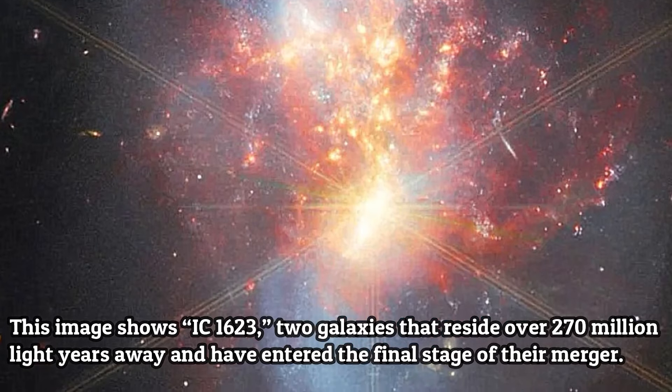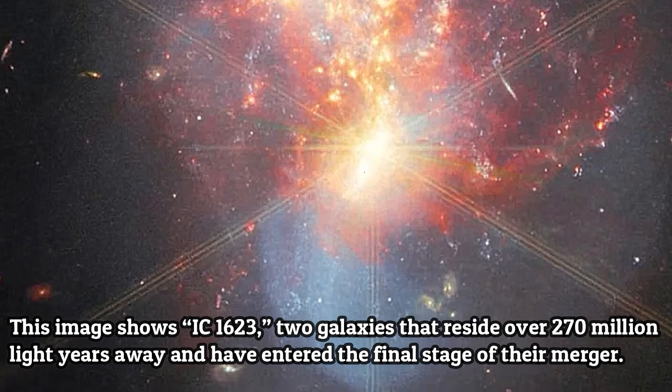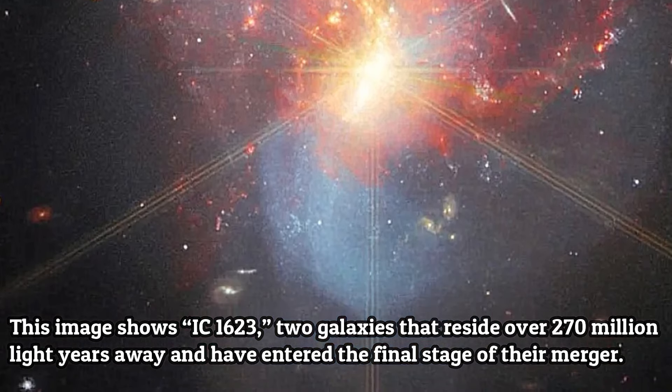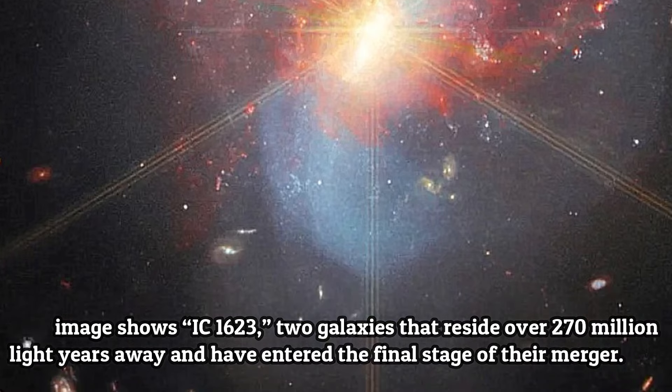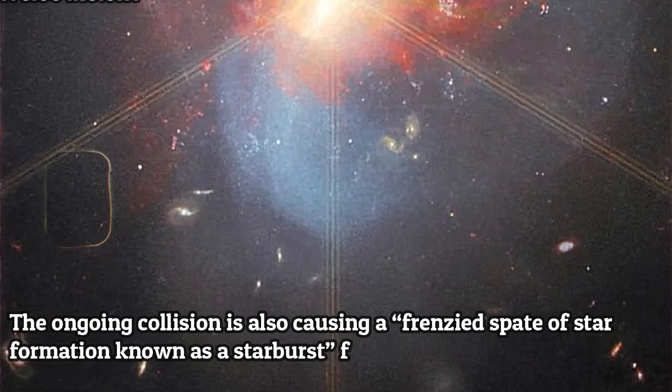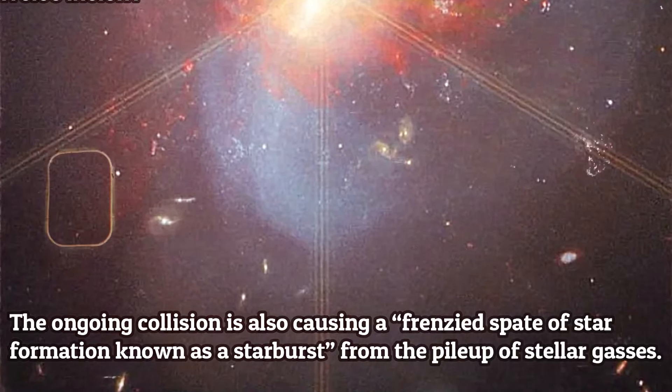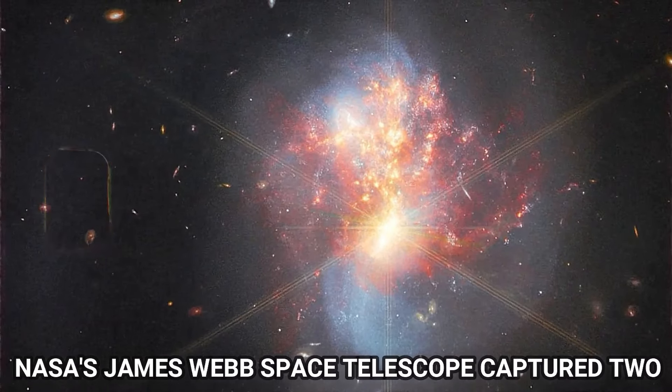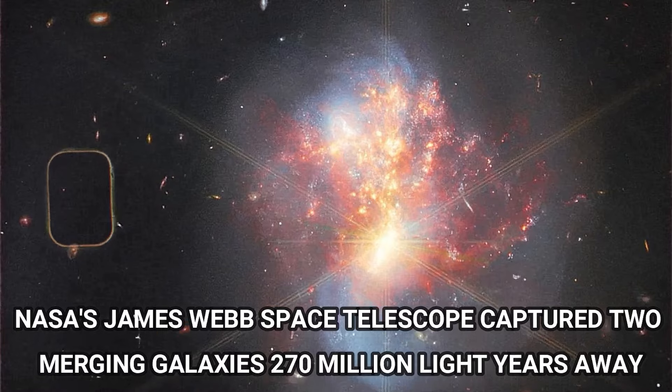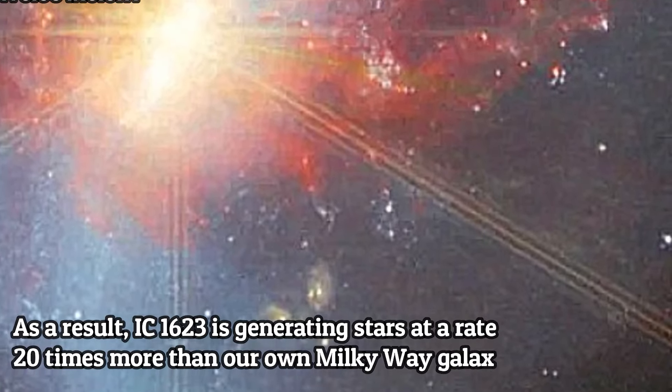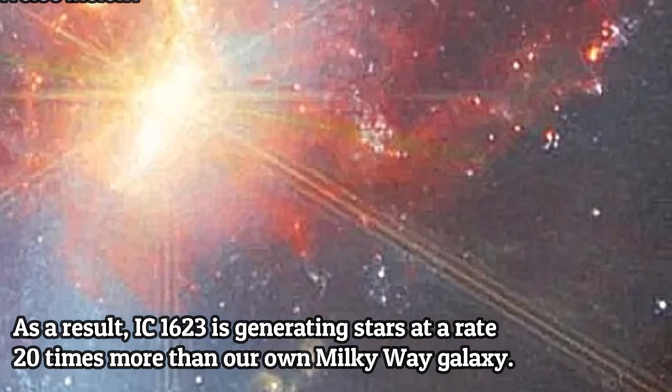Infrared radiation from these star-forming regions lit up Webb's sensors, creating its signature diffraction pattern, usually reserved for bright stars. This radiant spectacle, obscured by dust from Hubble's view, offers a new layer of understanding about stellar birth. Located 270 million light-years away, IC 1623 isn't just a collision of galaxies, it's a cosmic forge, sculpting stars at a rate 20 times faster than our Milky Way.